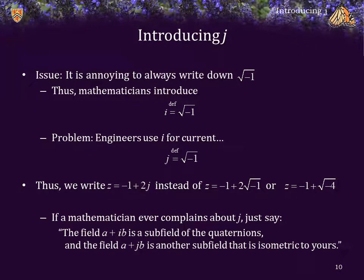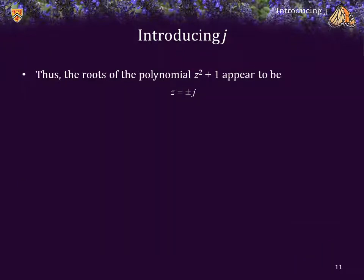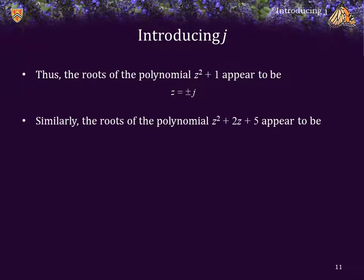Now, if mathematicians ever complain about using j instead of i, all you have to say is: the field a plus ib is a subfield of the quaternions, and the field a plus jb is another subfield that is isometric to yours. And then you can stick out your tongue. Thus, it appears that the roots of the polynomial z squared plus 1 can be written as z equals plus or minus j. Similarly, the roots of z squared plus 2z plus 5 appear to be z equals negative 1 plus or minus 2j.